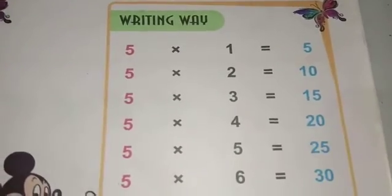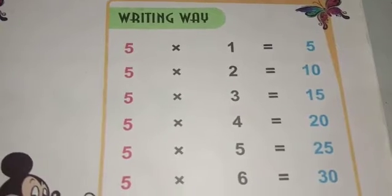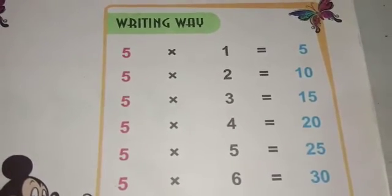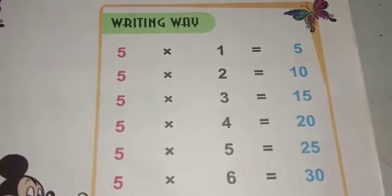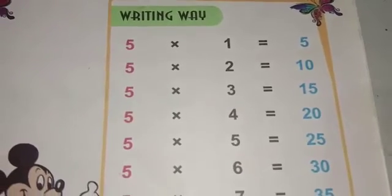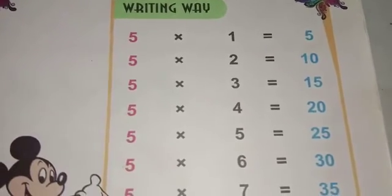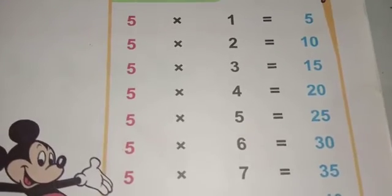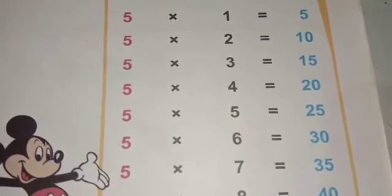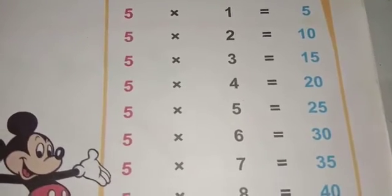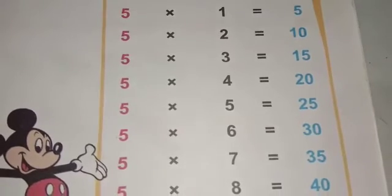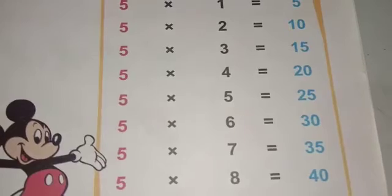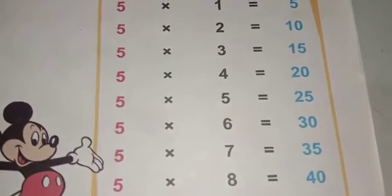Five one's are five, five two's are ten, five three's are fifteen, five four's are twenty, five five's are twenty-five, five six's are thirty, five seven's are thirty-five.